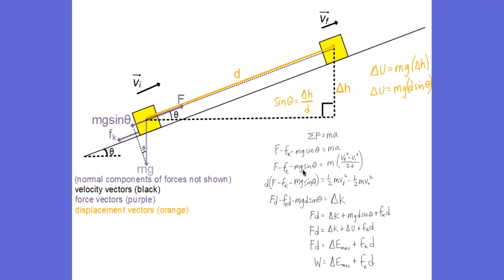F is in the positive direction, while kinetic friction and the weight component are in the negative direction down the ramp. Using the expression from the equations of motion solved for acceleration and substituting in, I cross-multiply D to the other side. Multiplying D through the parentheses gives F times D as the work done by the applied force, negative FkD as the negative work done by friction, negative mg sine theta times D as the negative work done by gravity, and that equals the change in kinetic energy — that is the work-kinetic energy theorem. Isolating Fd, the work done by the applied force equals delta K plus mgd sine theta plus FkD.